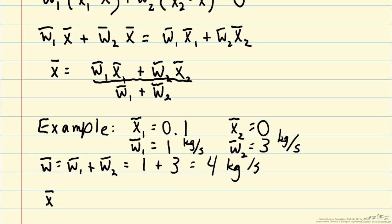And then we can calculate x bar, which gives us 0.025 as the mass fraction of species A in the outlet stream. And so again, you can see this really is a weighted average of 1 times 0.1 and 3 times 0. So we've diluted that stream one by a factor of four using stream two. So this shows how we can calculate steady state conditions in our tank and in our outlet stream.